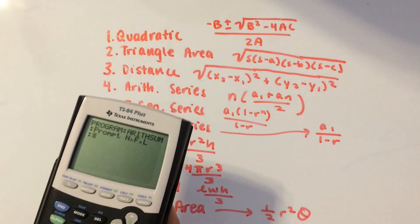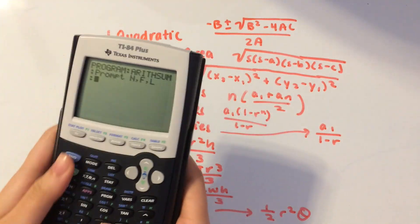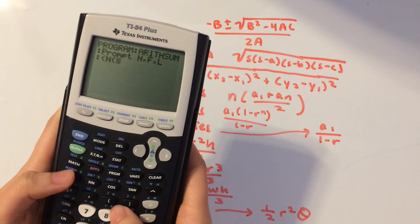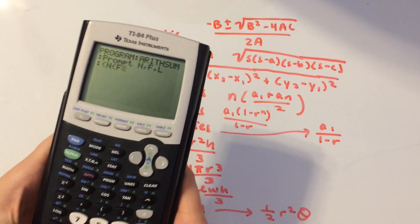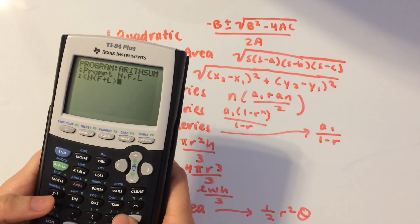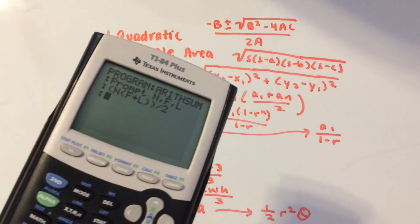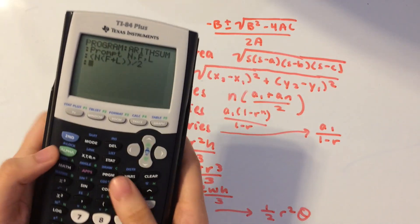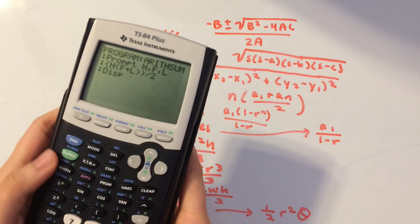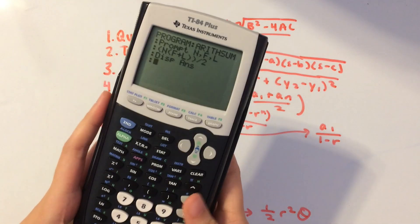Now enter the formula: N times (F plus L), close parentheses, over 2. Then display the answer — go to Program, IO, Display, Second Answer. Hit Enter and we're done with the arithmetic series.